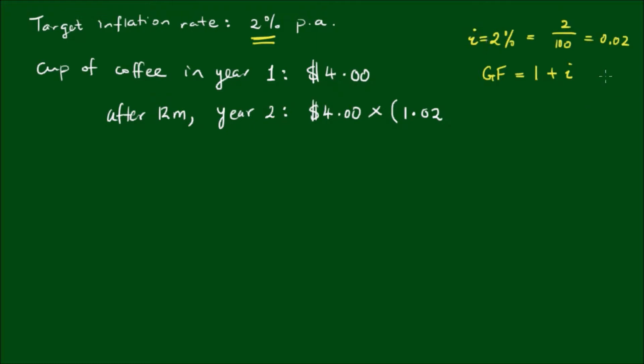In geometric sequence terms, the growth factor is simply equal to the common ratio r, as we established in our previous post. So we have $4 times the growth factor, and that's equal to $4.08. What about after another 12 months in year three? Well this time, we start at $4.08, and the price has grown by another 2%. So it's multiplied by the factor 1.02 again, which to the nearest cent is $4.16.